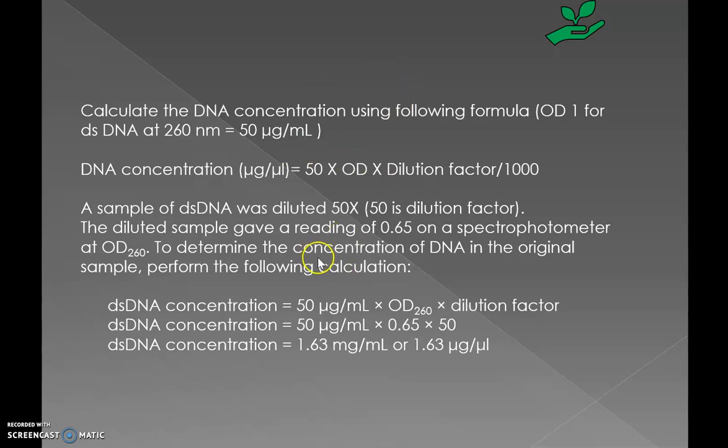In case of using a nanodrop spectrophotometer, there is a requirement of a very small quantity of sample and buffers. We can use the nanodrop when we have a very small amount of extracted DNA sample. In that case, the calculations for dilution and TE buffer can vary and can be done according to our requirement.